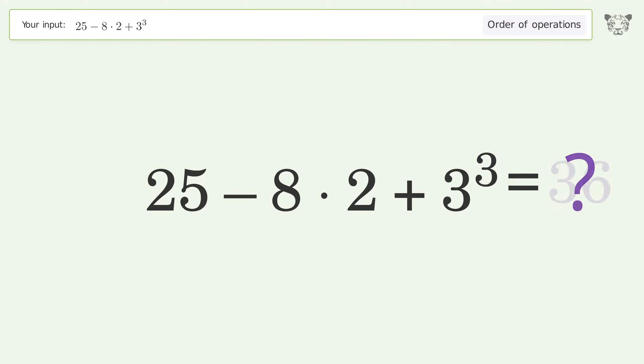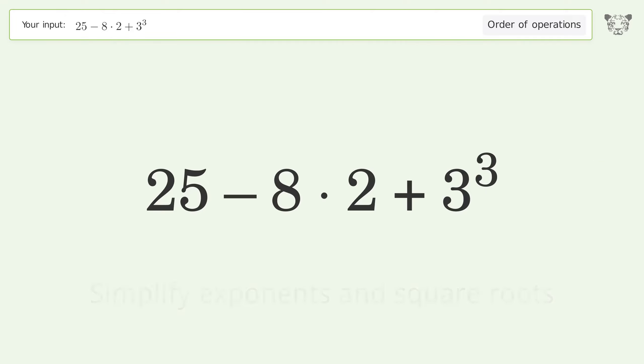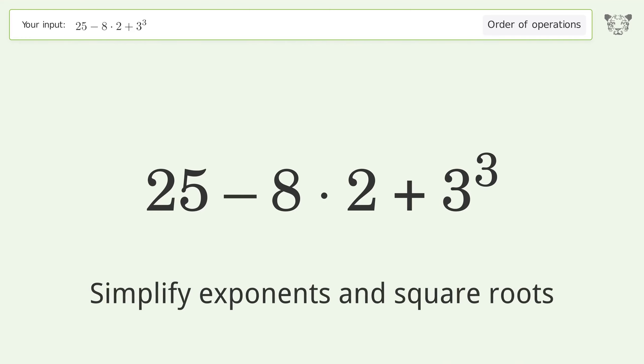You asked Tiger to calculate this. It deals with the order of operations — the final result is 36. Let's solve it step by step.